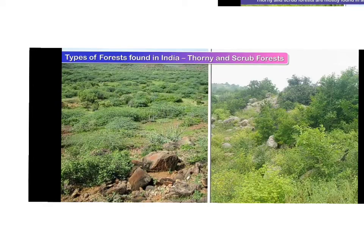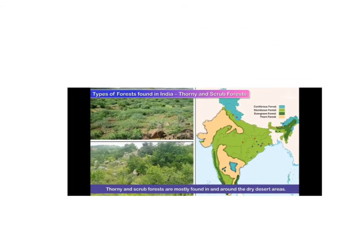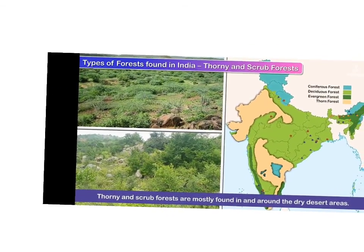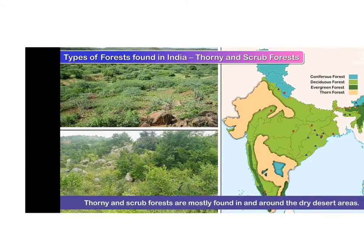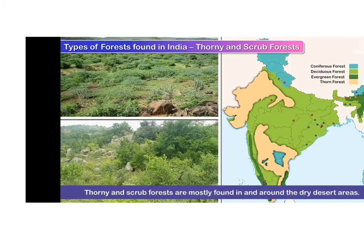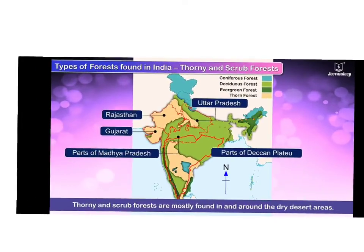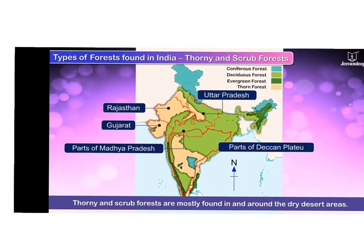Next are thorny and scrub forests. These are mostly found in and around the dry deserts of Rajasthan, Gujarat, parts of Madhya Pradesh, Uttar Pradesh, and parts of the Deccan Plateau. In these areas, thorny and scrub forests are found.